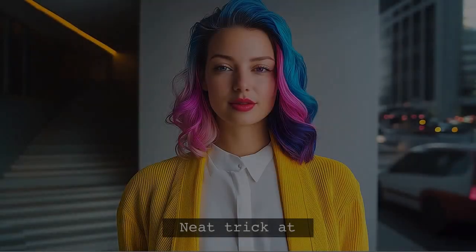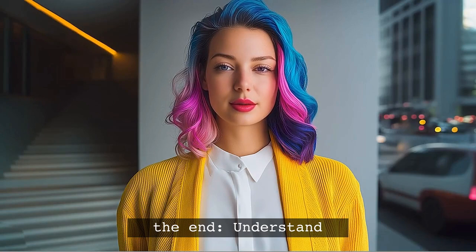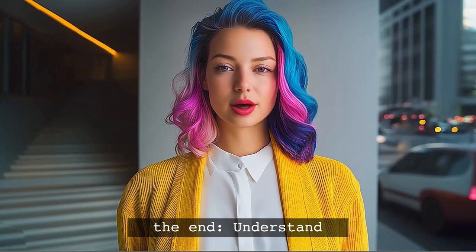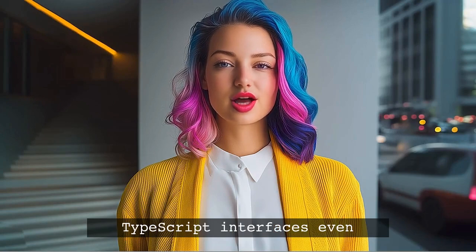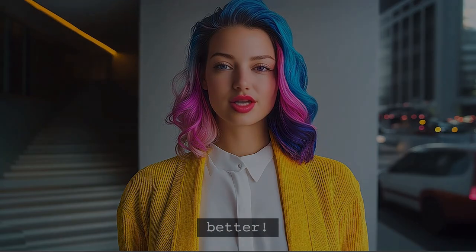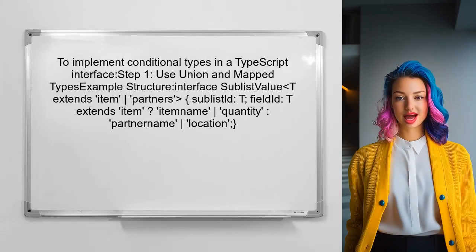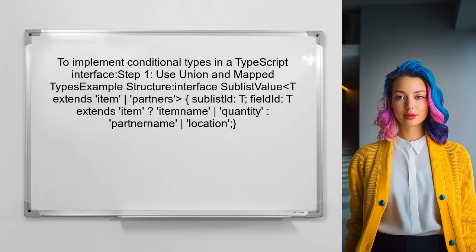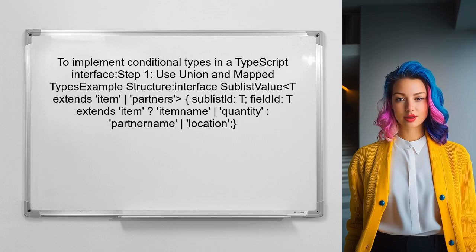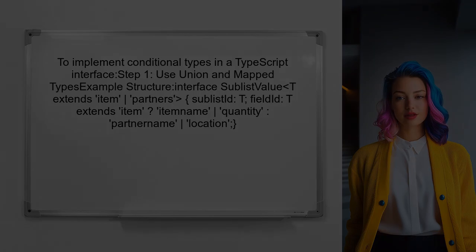Let's break it down step by step. And stick around — I have a neat trick at the end that will help you understand TypeScript interfaces even better. To implement conditional types in a TypeScript interface, the user can utilize a union type along with a mapped type. This allows for defining different structures based on the value of a specific key.